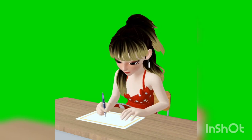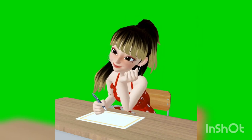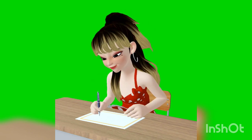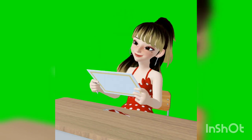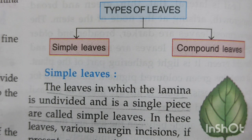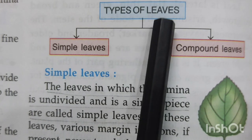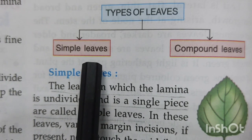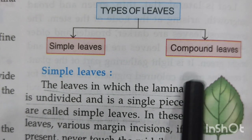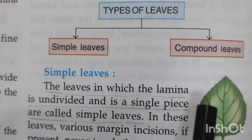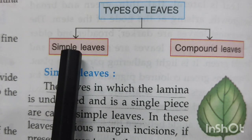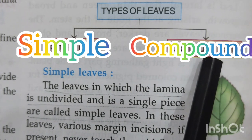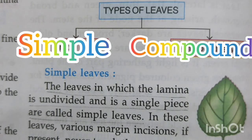Good morning children, let's begin with the second video of bio today, that is about the leaf. We are going to begin with types of leaves today. There are two types of leaf depending upon their lamina — the green colored portion of the leaf. Depending upon this lamina, leaves can be of two types: simple leaves and compound leaves.